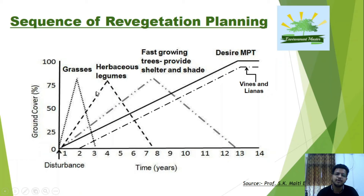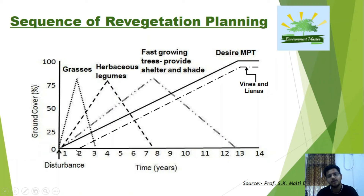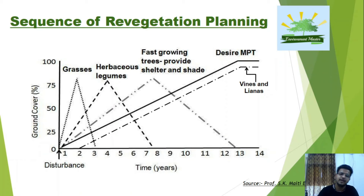Fast-growing trees regenerate in about eight years and continue increasing around 13 years — continuously increasing — while the desired MPT species start to grow at two years but continue with a continuous, sustained increase that never declines, always applying a gradual phased growth.